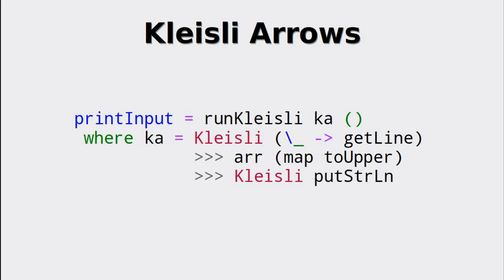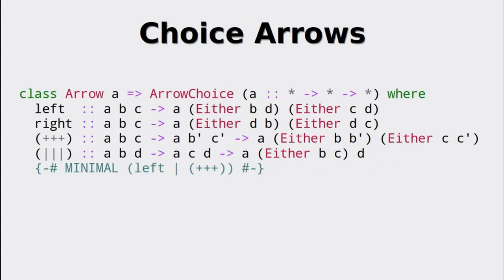A topic we have not yet visited are conditionals. Sure, we can use if and case in a function we use within our data flow, but is there a possibility of incorporating the conditional computation into the data flow itself? The answer is given by choice arrows that extend the combinators we have seen for normal arrows. Immediately, we see the usage of the Either type, which can be used to denote a correct and a failure state. In the same vein, conditionals are treated in the choice arrow.